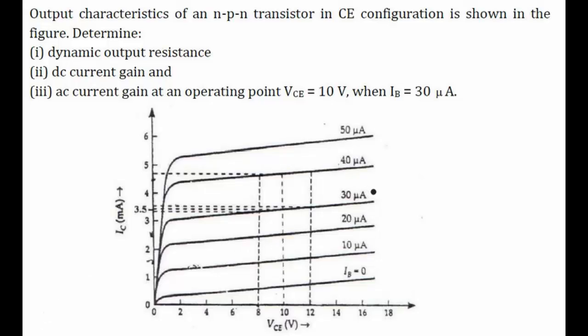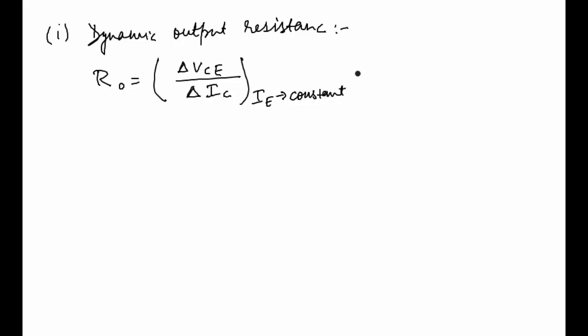We have to consider our operating point as 10 volts and the base current is 30 microamperes, so we will be considering this graph. We have been given the values of IC for 12 and 8 volts respectively, so considering the 12 and 8 volts.